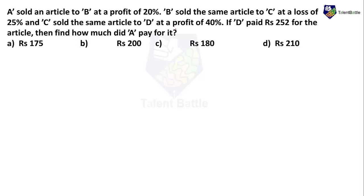Profit and loss questions can be solved by multiple methods. Some of you might try to do it in reverse order — starting with D, then going to C, B, and ultimately finding the value of A. But I would recommend against that as it takes much more time. You can do this question in a single step, but first you need to understand the logic.